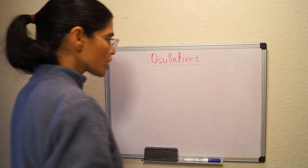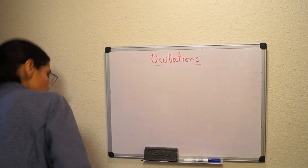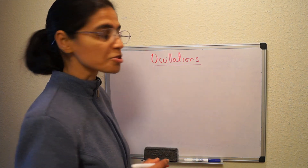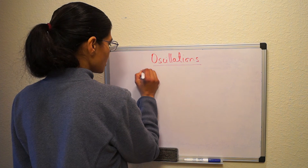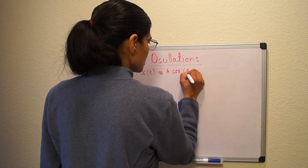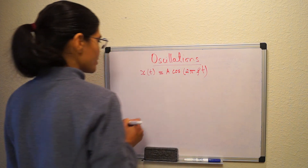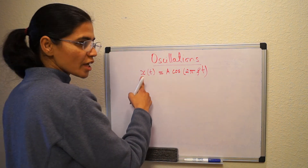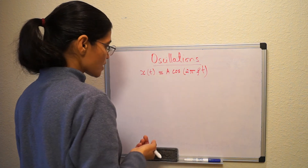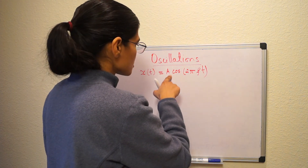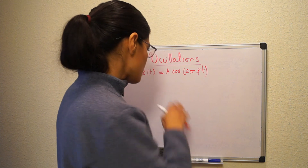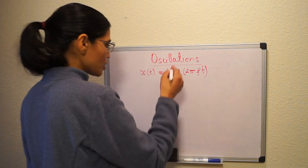I'm going to revise the key equations again. For the position versus time graph of simple harmonic motion, we can model it with the mathematical function: x(t) = A cos(2πft), where x is the position at time t, A is the amplitude — the maximum displacement from equilibrium position — and f is the frequency of oscillation.